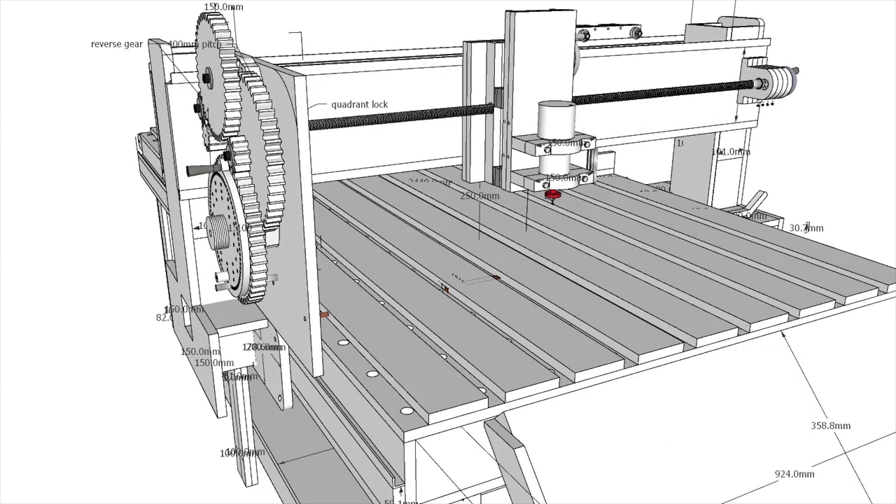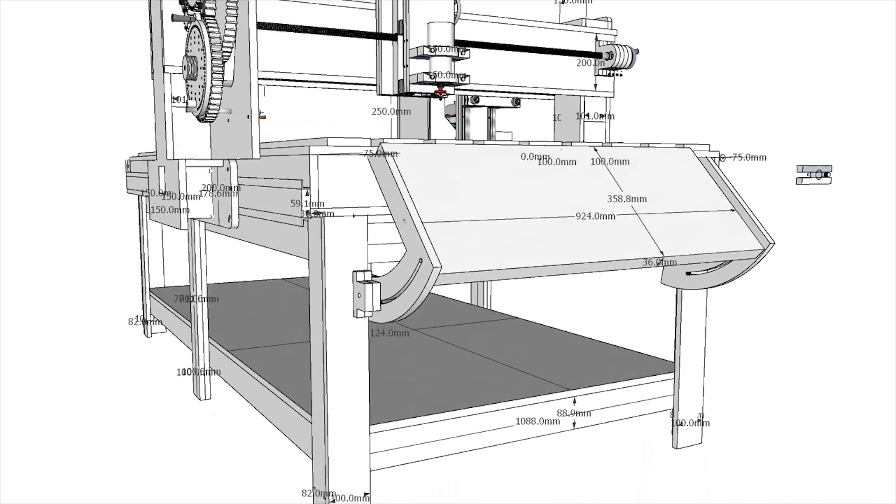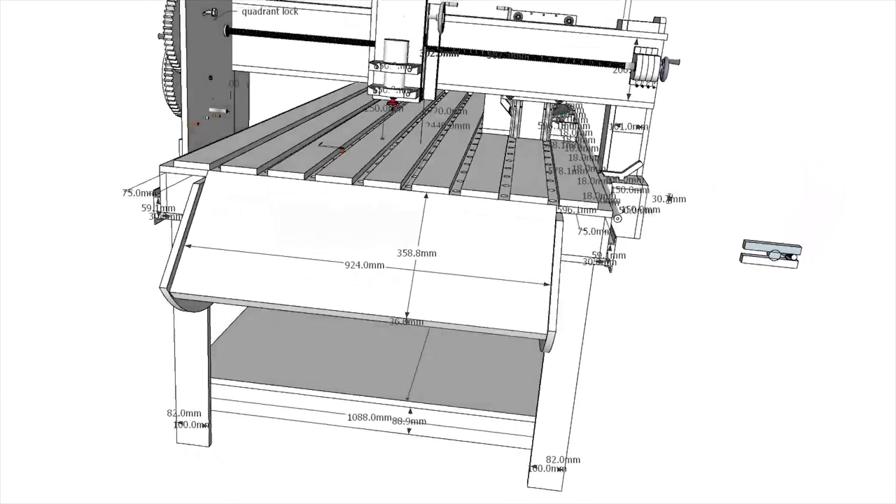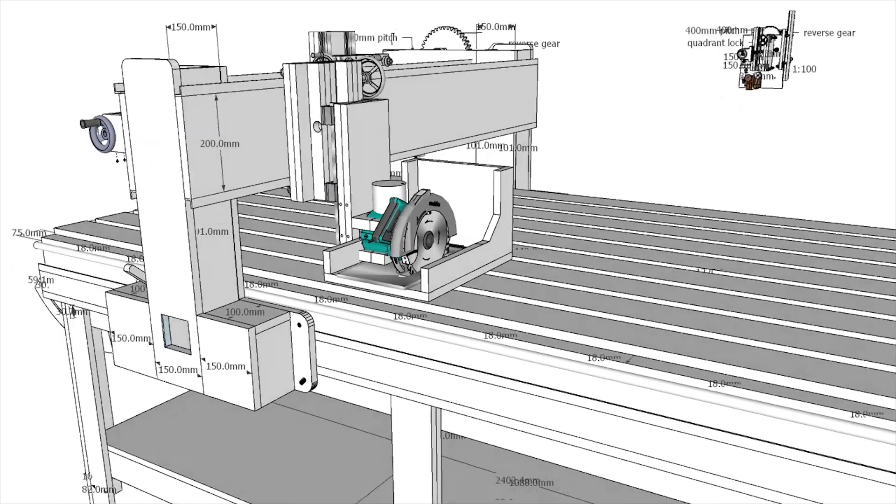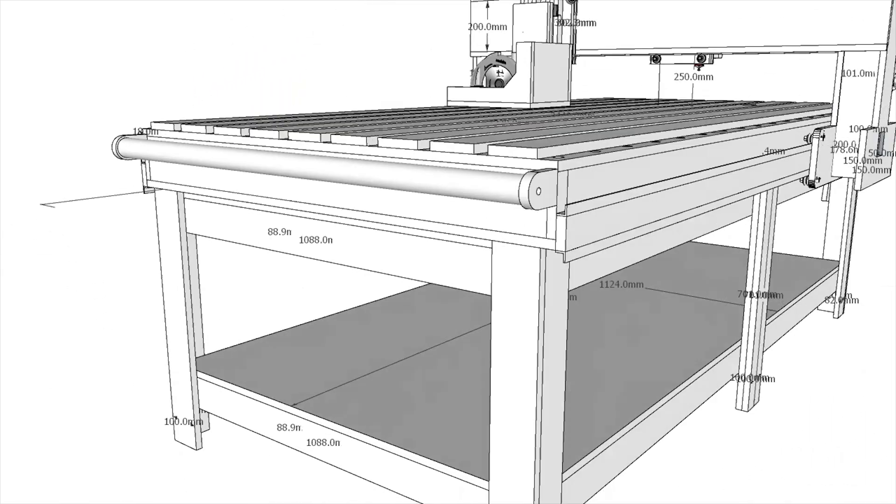A radial arm saw is a great tool and one of the most versatile woodworking machines in my opinion. When I first saw how radial arm saws were used, the first thing that came to my mind was they should put wheels on it.